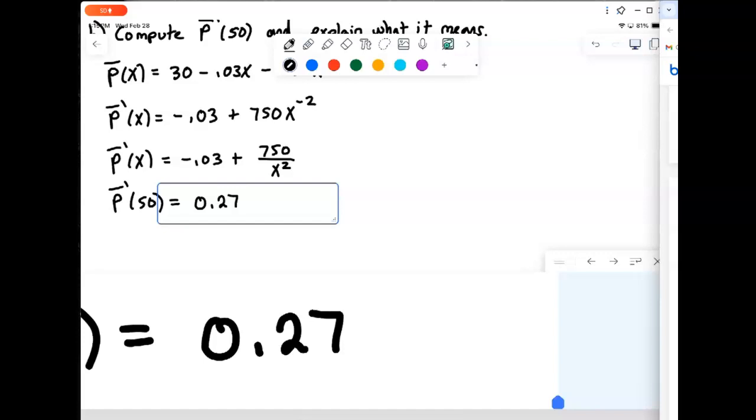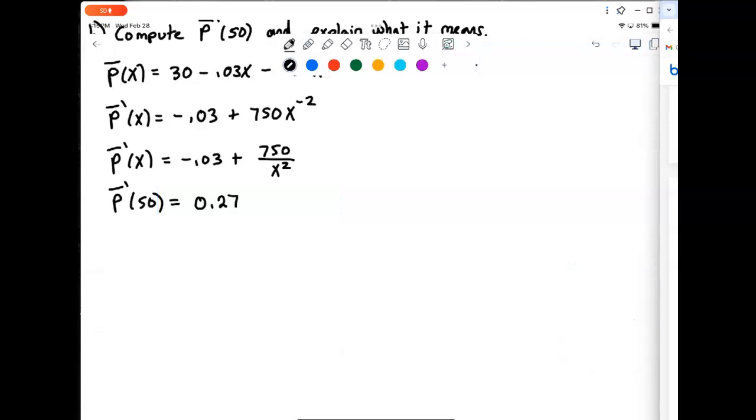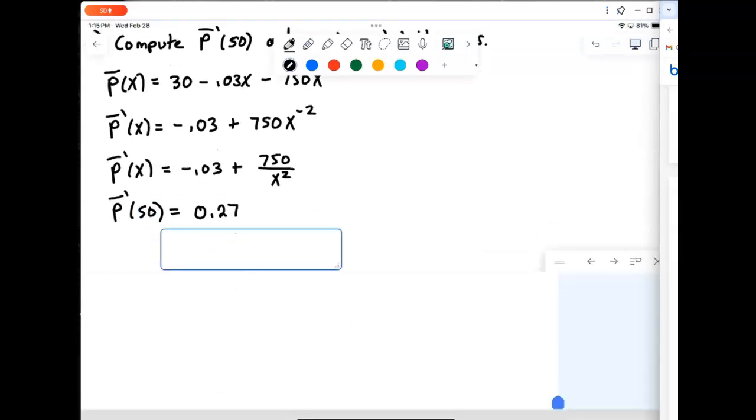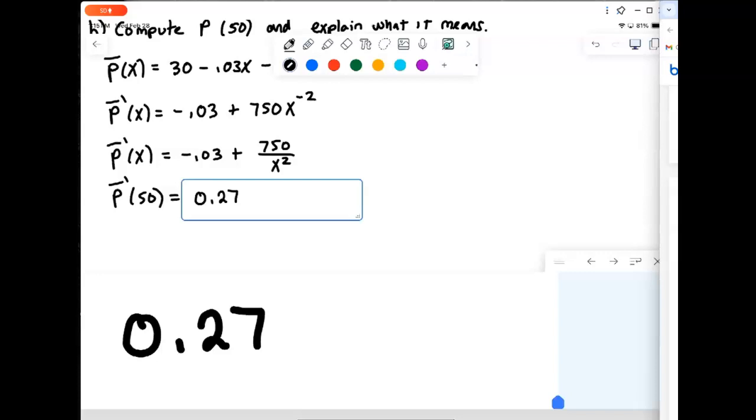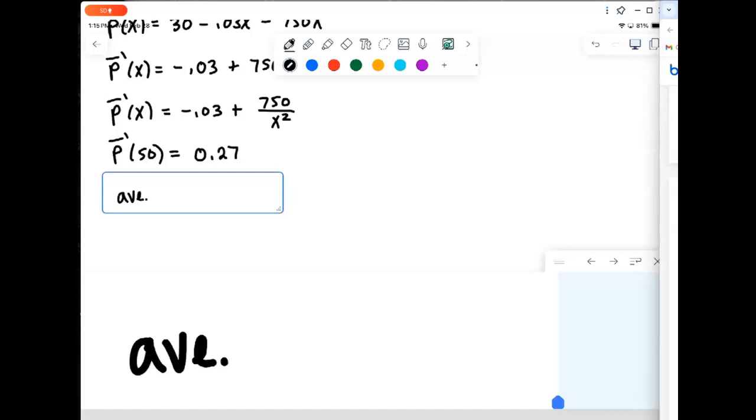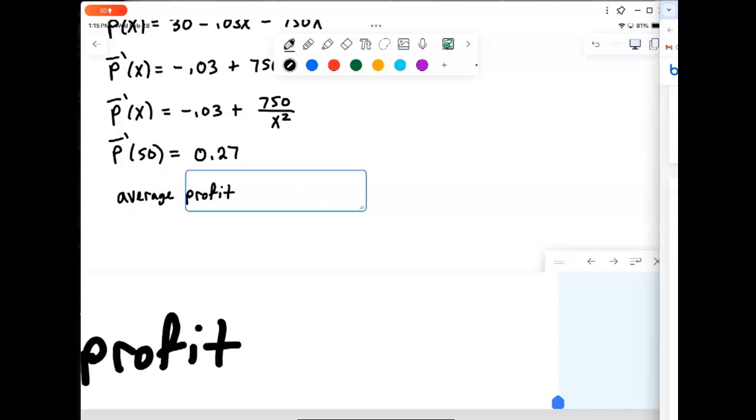Now what in the world does that mean? Well, remember the derivative is a slope. So this is telling me what's happening to my P bar function, my average profit, as we increase the number of mowers sold. Well, P bar is the average profit, and so that's a positive slope, 0.27, so that means that our average profit is increasing.